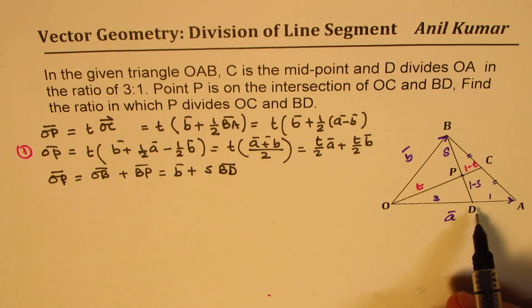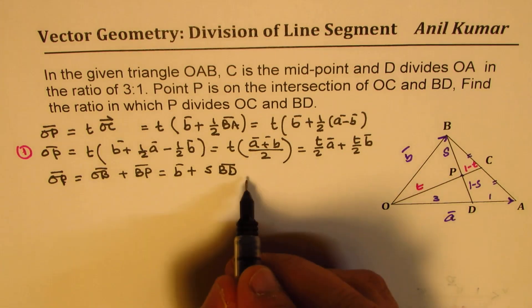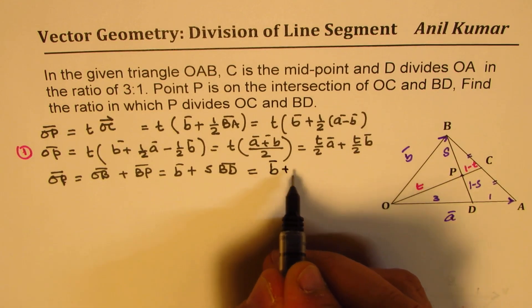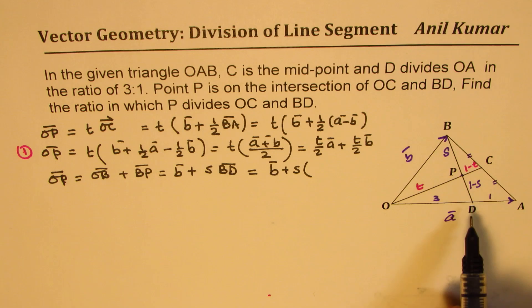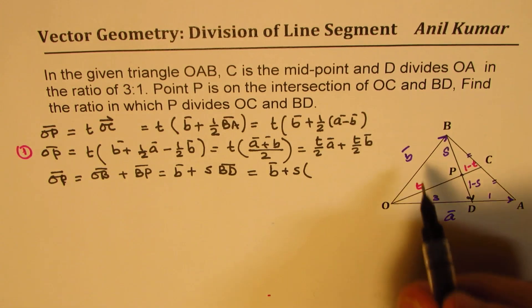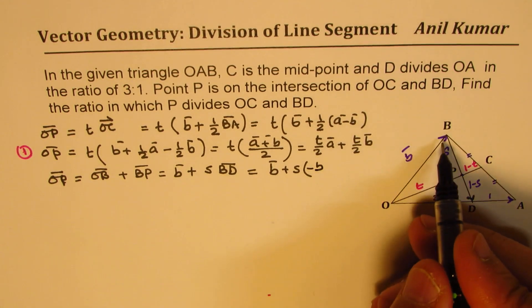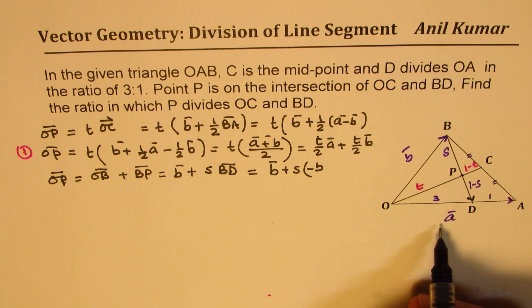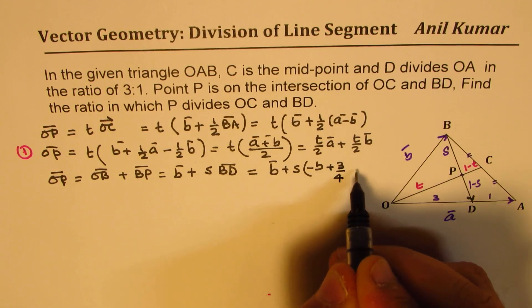What is BD? BD will be OD. So, B times plus S times. What is BD? So, B to D is, so we want to go B to D. So, minus B, right? We go in this direction and then there, which is 3 times A. 3 over 4 times A. Plus 3 over 4 times A.